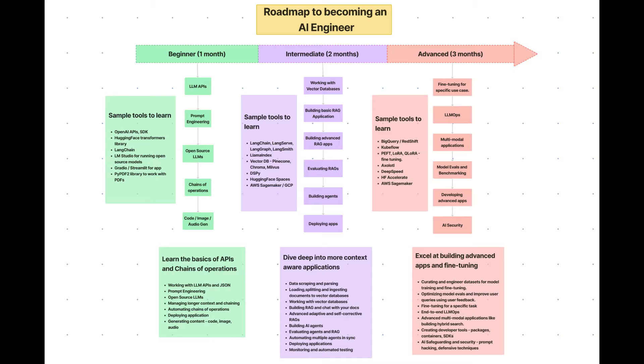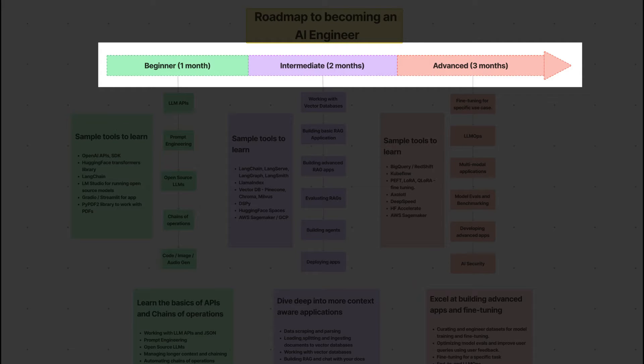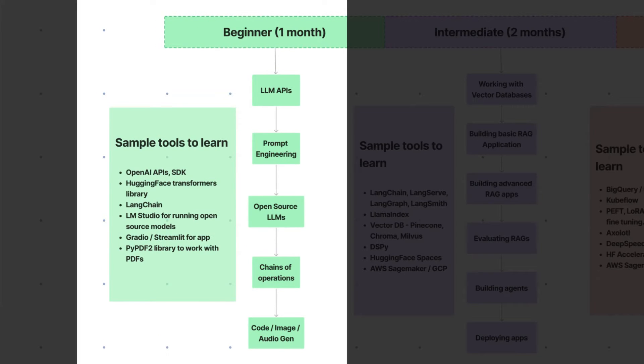I have broken down this roadmap into three stages. You're going to go from left to right, from beginner to intermediate to advanced. The beginner stage is maybe close to one month long. You should look to develop basic applications, learn to work with LLM APIs, learn to build ChatGPT-like applications, bots for WhatsApp, for Discord, for Telegram, or using frameworks like Gradio or Streamlit.